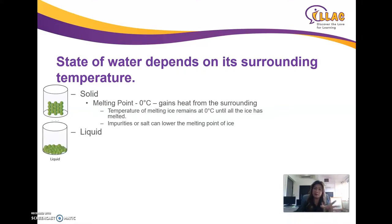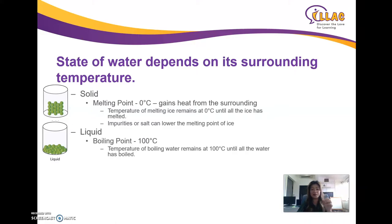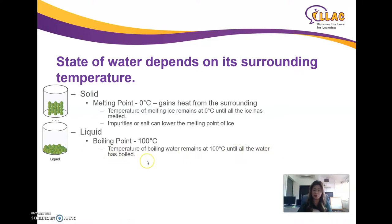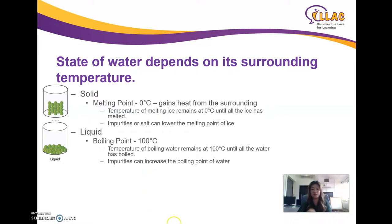Liquid: they take the shape of the container, they have energy, they're moving already. They are not as packed as ice. Their boiling point is 100 degrees Celsius — meaning they gather a lot of energy to overcome their water state and fly out to evaporate. The temperature of boiling water remains at 100 degrees Celsius until all the water has boiled. Impurities can increase the boiling point of water — the dirtier the water or the more chemicals added, the higher the temperature needed for it to boil.